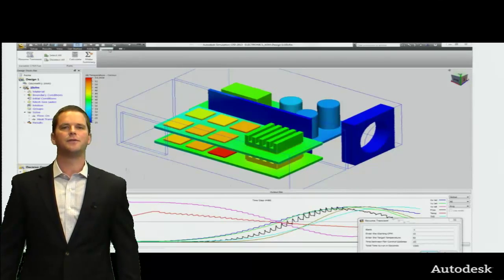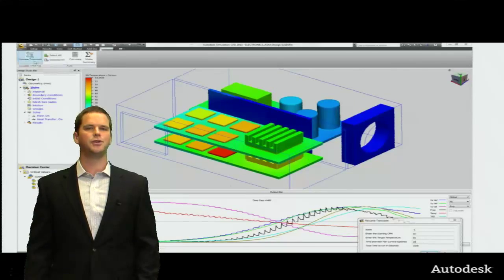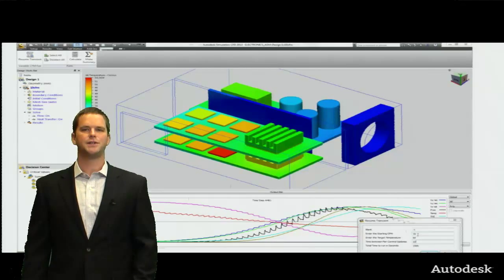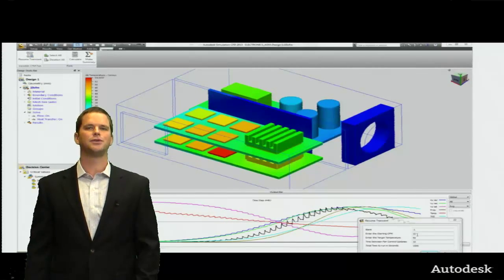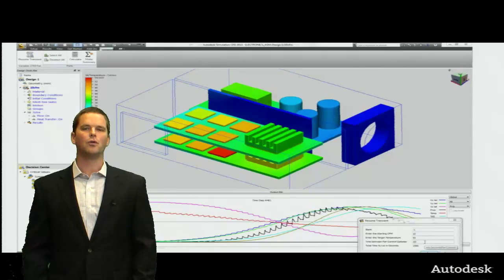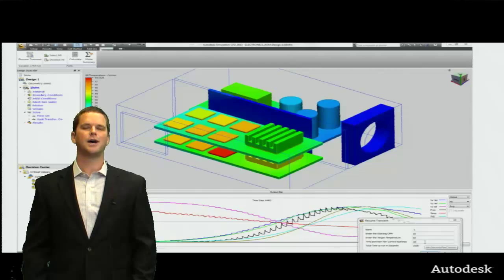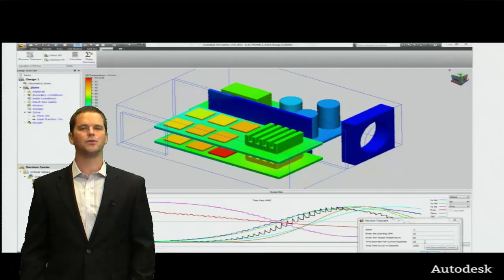So in this box, we have a heat sink, board, a few chips. Those are in orange and red. And then on the right side is the actual fan housing. The fan is shown as invisible here. But essentially, we're going to use this simplified model to show off the technology.